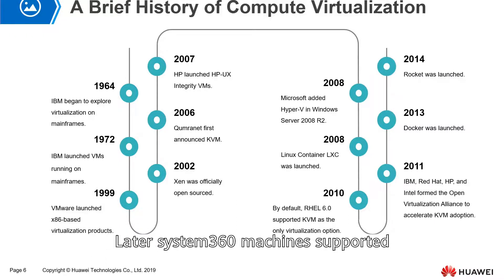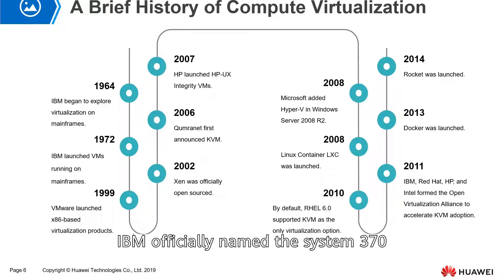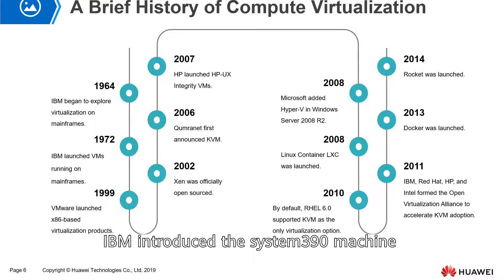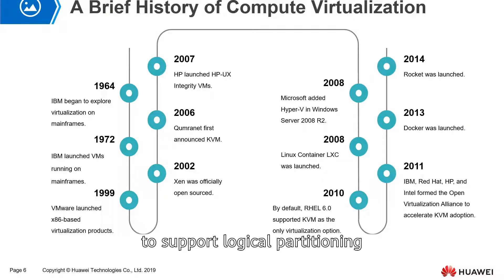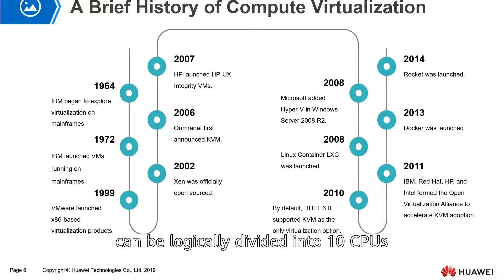Later, the System 360 machines supported time-sharing systems. In 1972, IBM officially named the System 370 machine's time-sharing system as a virtual machine. In 1990, IBM introduced the System 390 machine to support logical partitioning — dividing a CPU into several independent parts. That means a physical CPU can be logically divided into 10 CPUs.